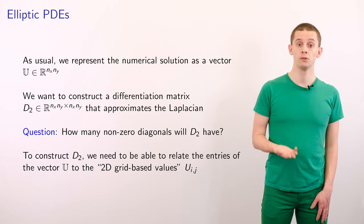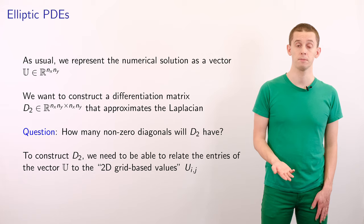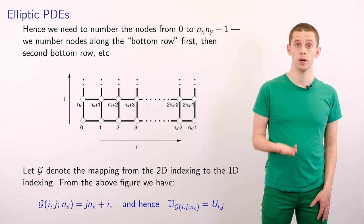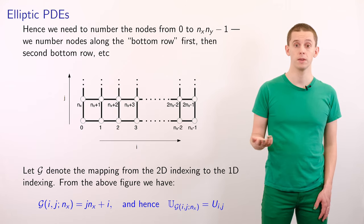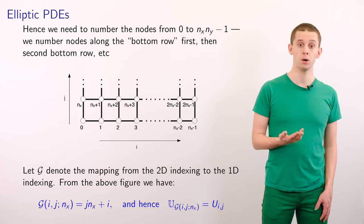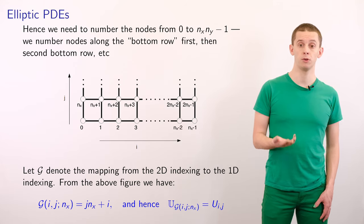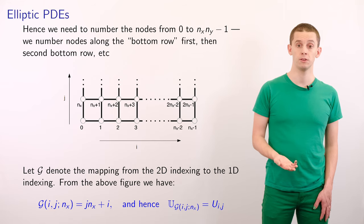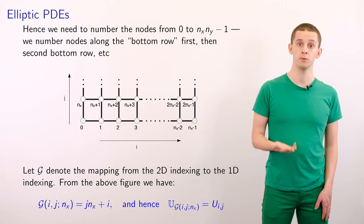To construct D2 we'll need to relate the entries of the vector u to our 2d grid based values u at i comma j. Hence we need to number the nodes from 0 to nx times ny minus 1 and what we'll do is we'll go along the first row of the grid and label those from 0 to nx minus 1, and we'll then go along the second row of the grid and label those from nx to 2nx minus 1 and so on. So let script G denote the mapping from the 2d indexing to the 1d indexing. And from the above figure we can see that script G of i comma j with a grid of size nx will just be equal to j times nx plus i.